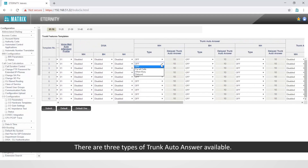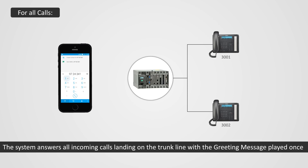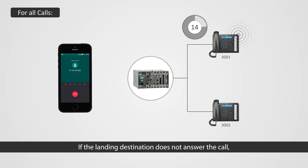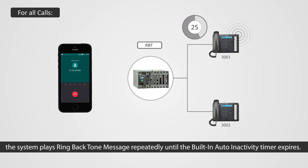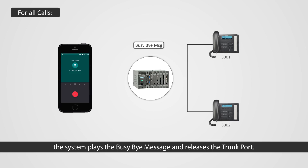There are three types of trunk auto-answer available. For all calls: the system answers all incoming calls landing on the trunk line with the greeting message played once, and a built-in auto-inactivity timer — default 60 seconds — starts. If the landing destination does not answer the call, the system plays the ring back tone message repeatedly until the built-in auto-inactivity timer expires. After expiry, the system plays the busy-by message and releases the trunk port.